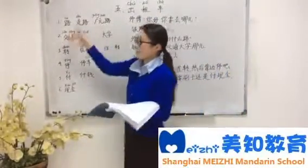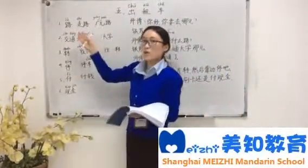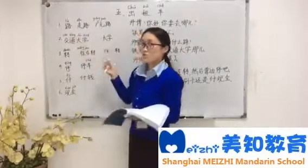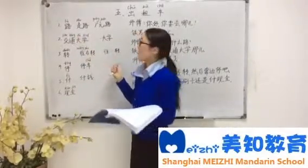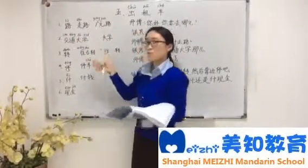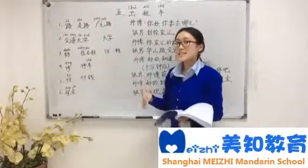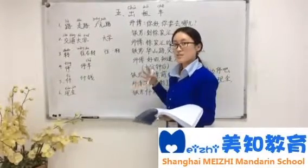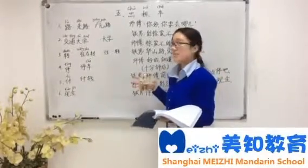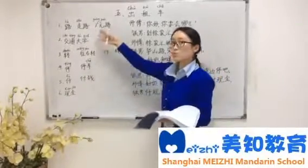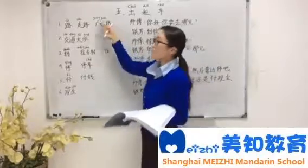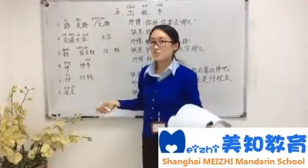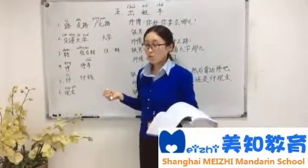Some new words. First one: 路. 路 means road. For example, 走路. 你怎么来学校的？走路. 广原路. 这是广原路.